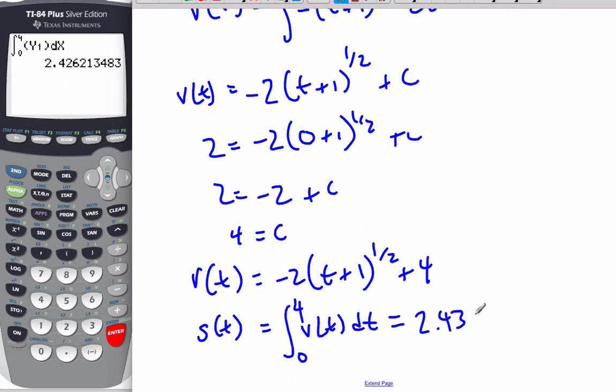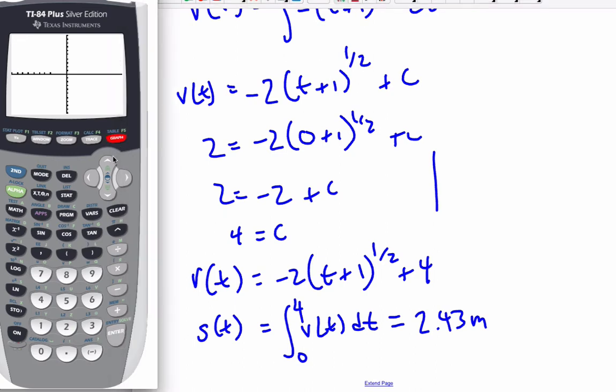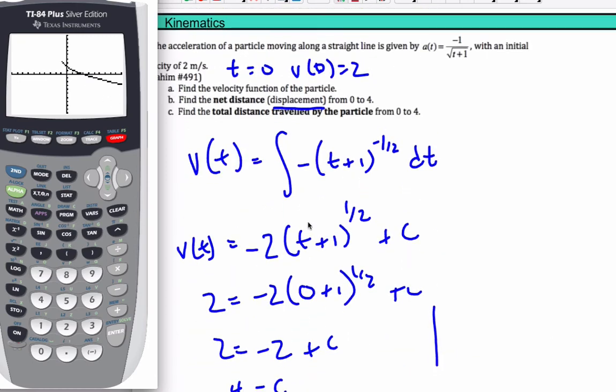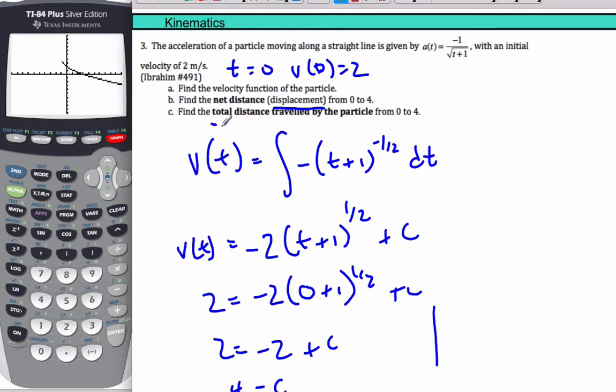And that is the net distance displacement. So even if I look at my velocity function, if I look at the graph, this is positive displacement, this is negative displacement. You have to subtract them to get the correct value. So you're going to do it now, which is different, though, from the total distance traveled by the particle.